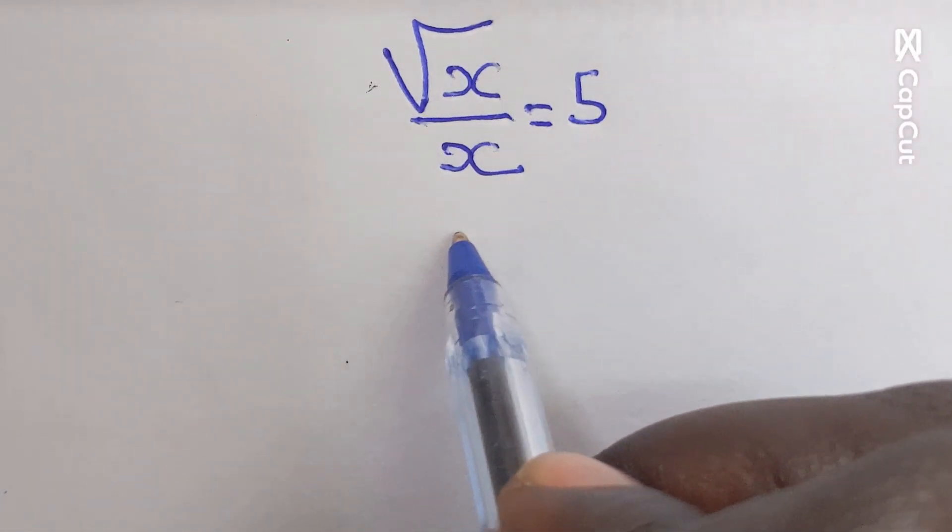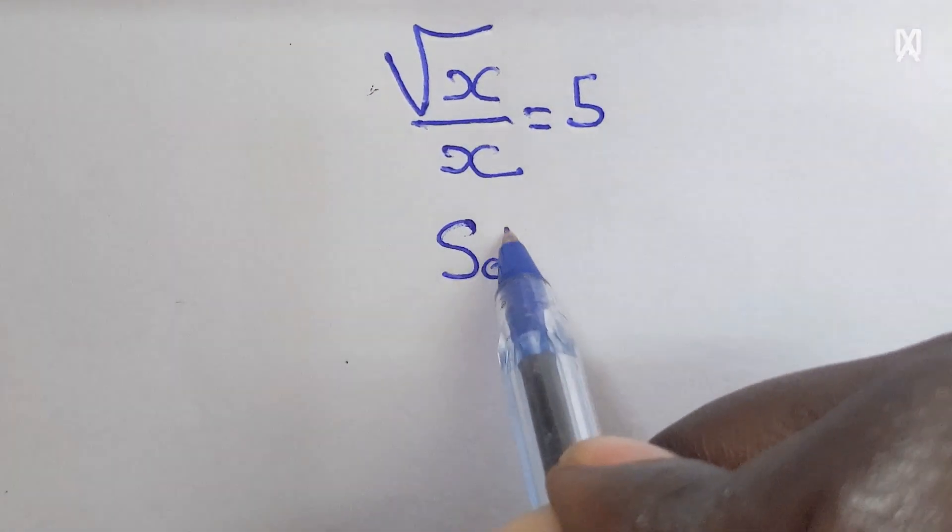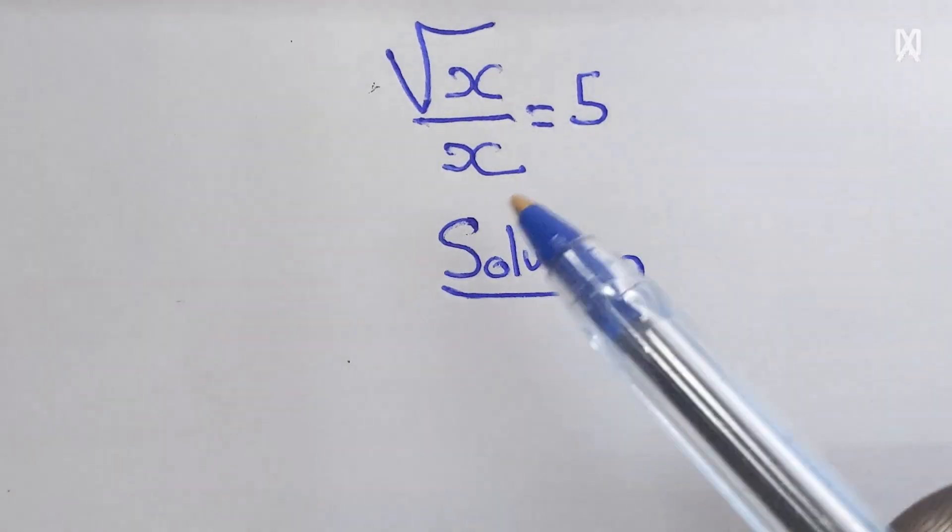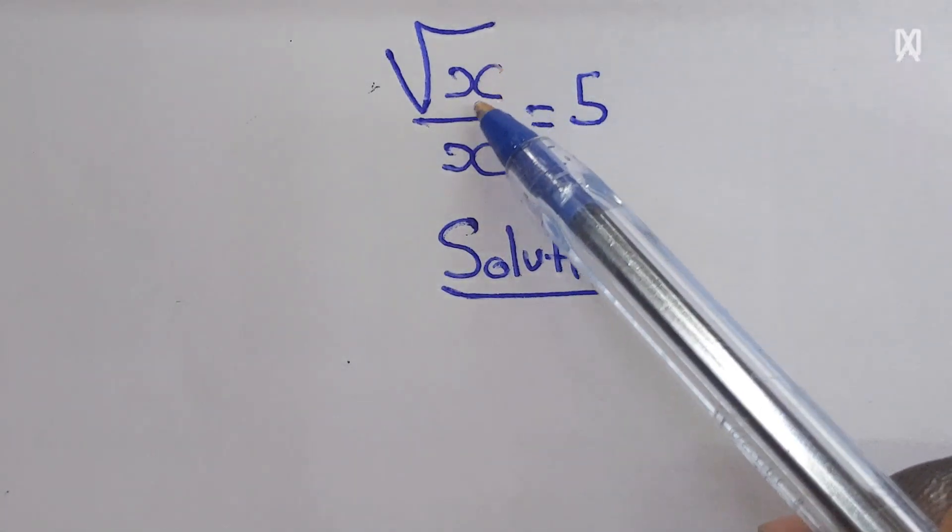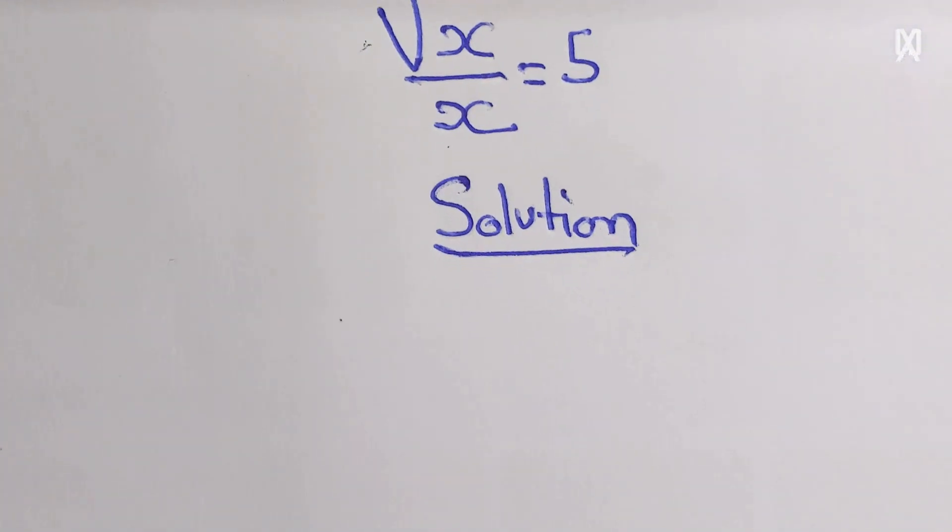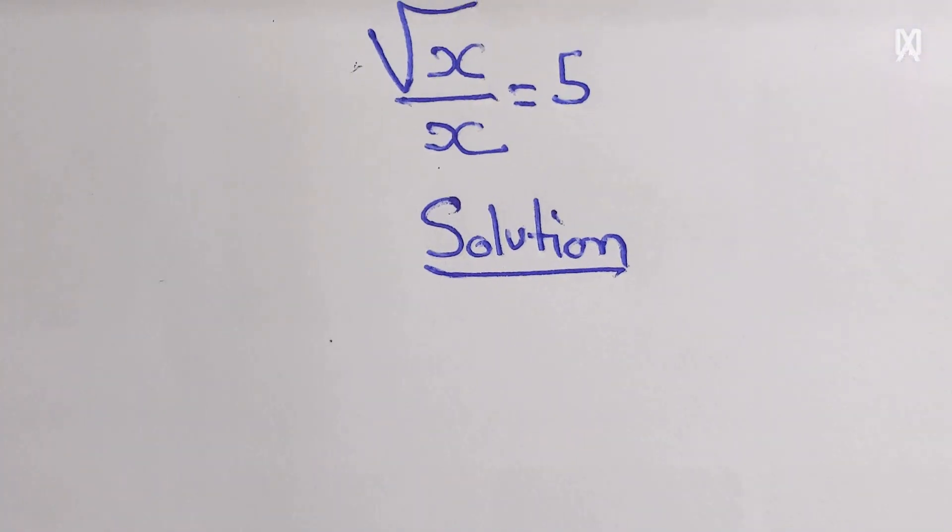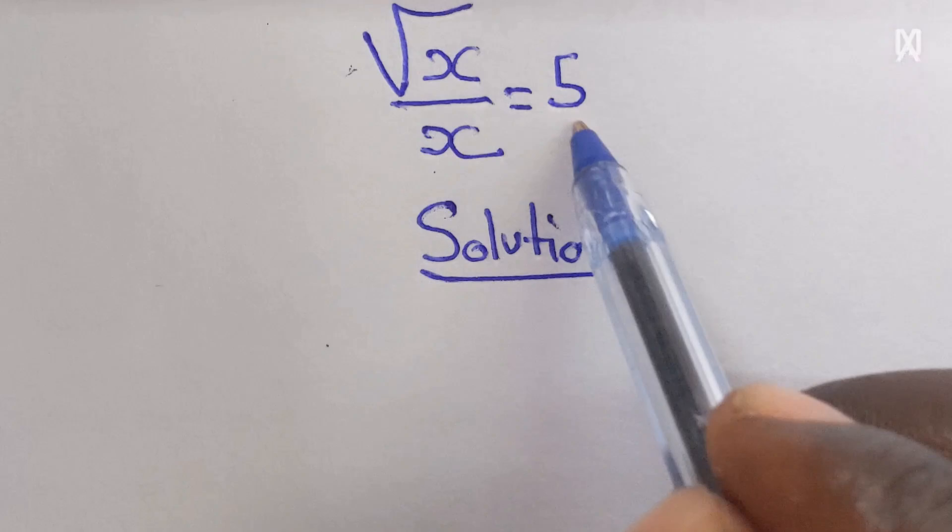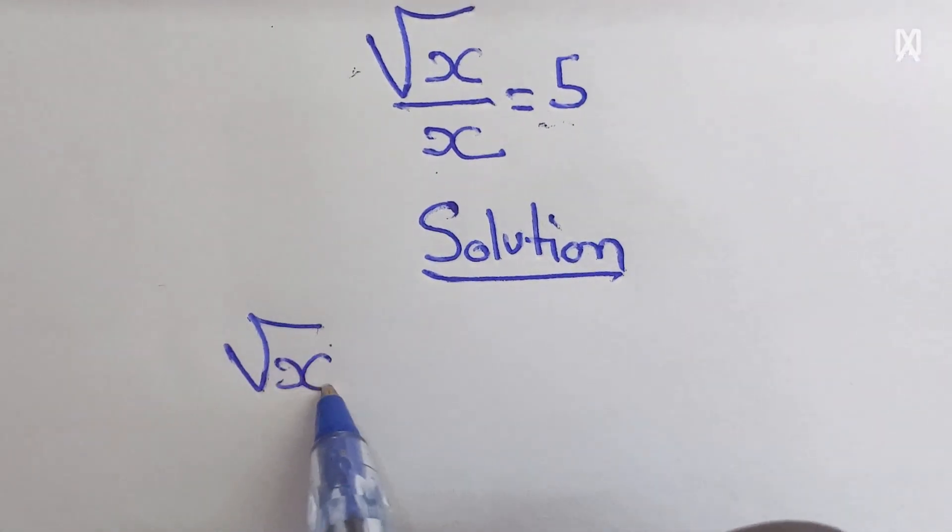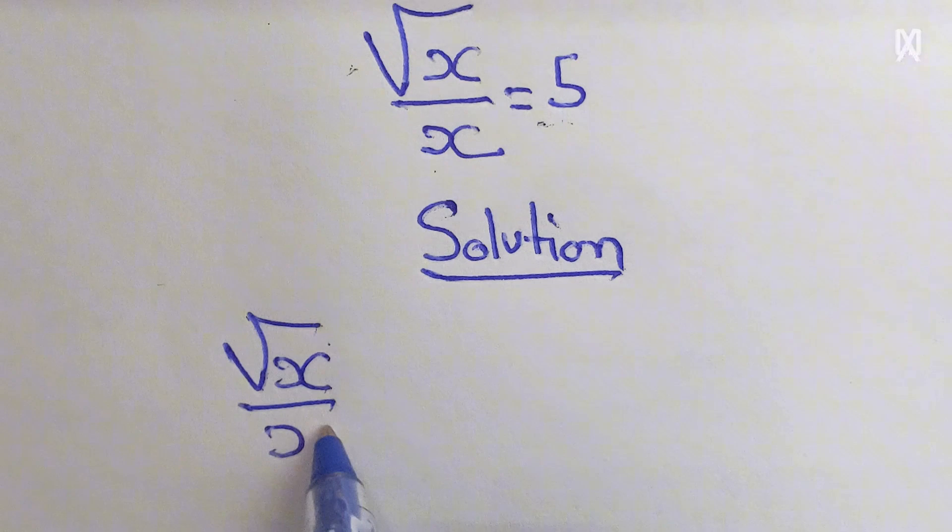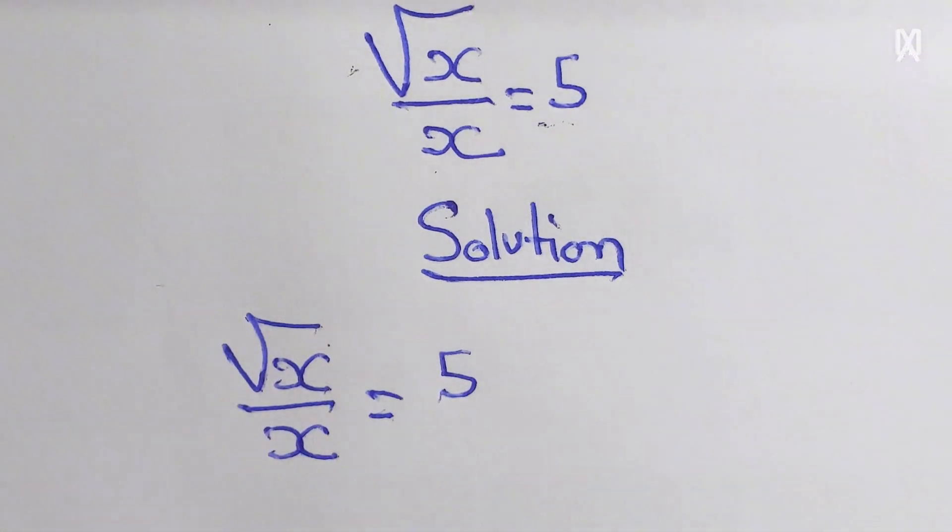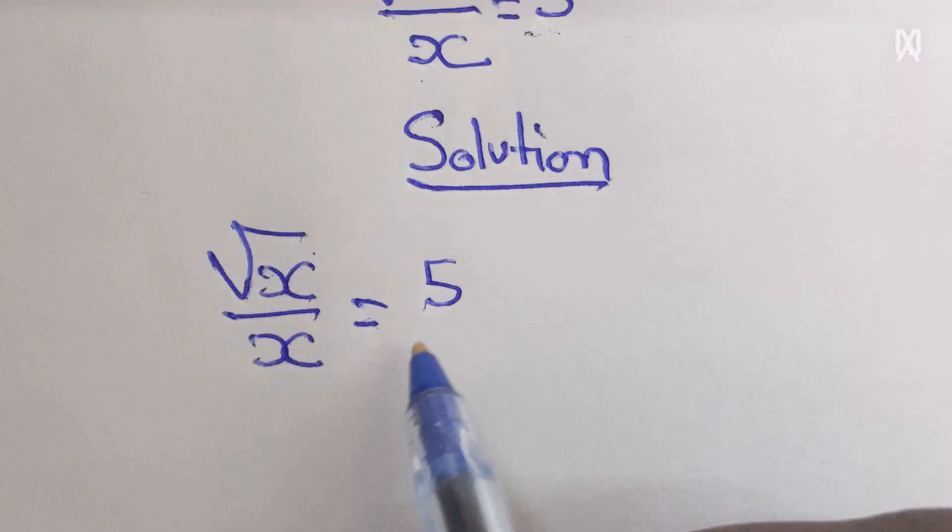Hello, once again welcome to my YouTube channel. Now let's provide the solution. Square root of x over x is equal to 5. Okay, here we can write this one as: let's copy what we have, square root of x over x equal to 5.